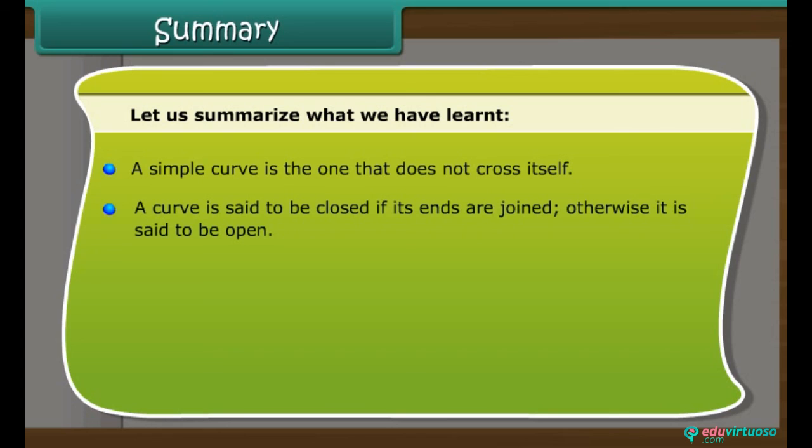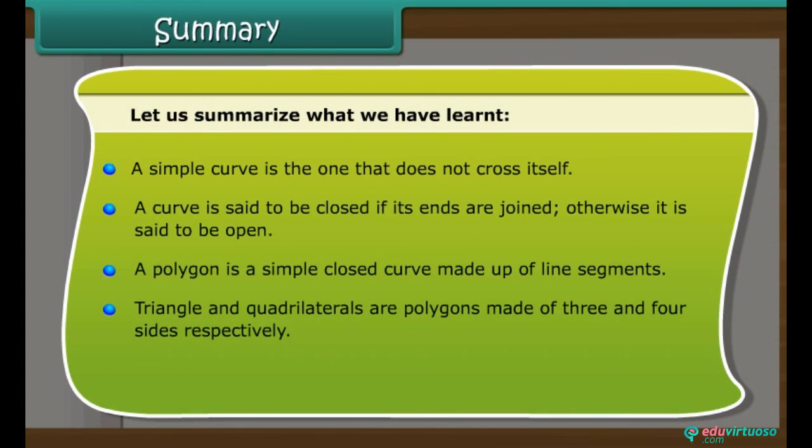A polygon is a simple closed curve made up of line segments. Triangle and quadrilaterals are polygons made of three and four sides respectively. A circle is the path of a point moving at the same distance from a fixed point.